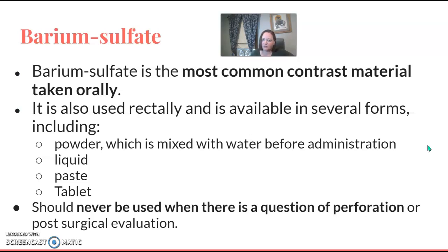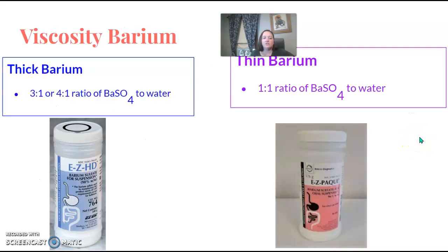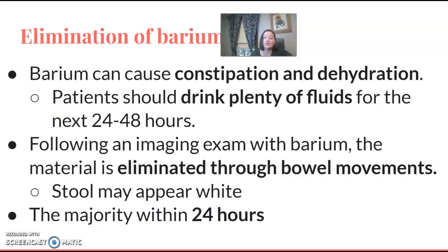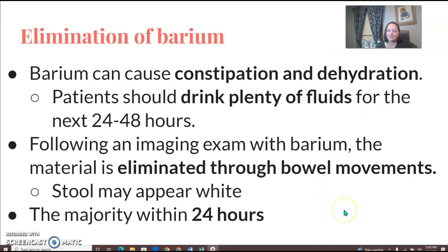Barium should never be used if there's a question of perforation. Viscosity refers to thickness — thick barium is a three-to-one or four-to-one ratio of barium to water, while thin barium is one-to-one. For elimination: after an upper GI or BE, tell patients to drink lots of fluids for the next 24 to 48 hours, otherwise they may experience constipation or dehydration. Barium is eliminated through bowel movements and stool may appear white or gray, but most is out within 24 hours.